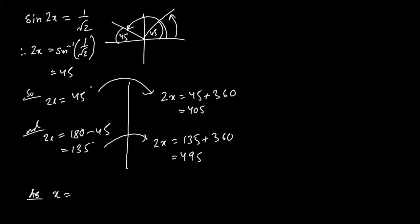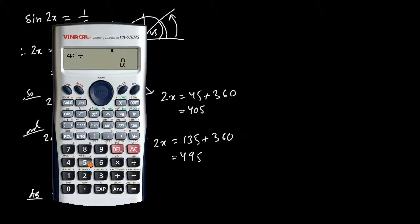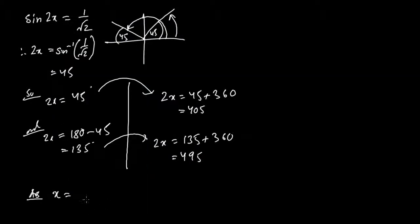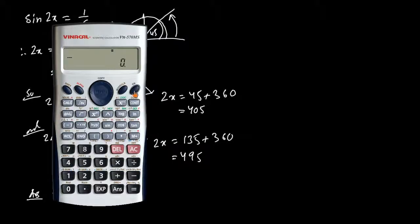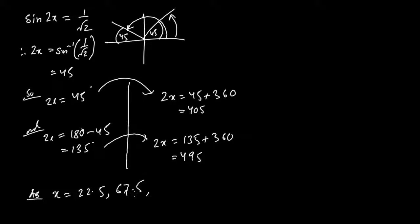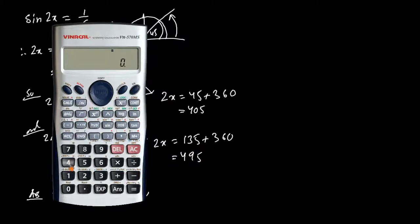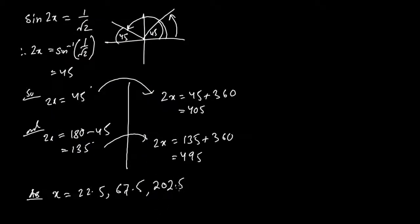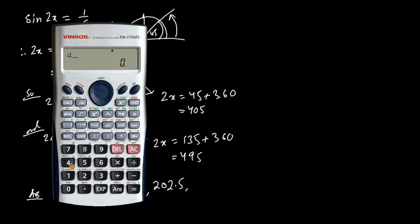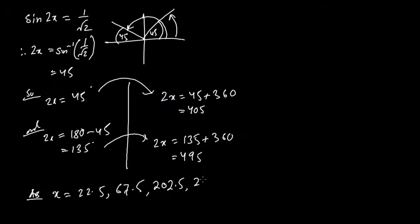Now we break down to find x at the final step: 45/2 = 22.5, 135/2 = 67.5, 405/2 = 202.5, and 495/2 = 247.5. All four values are within the range of 0 to 360 degrees. So we have four values for x: 22.5, 67.5, 202.5, and 247.5 degrees.